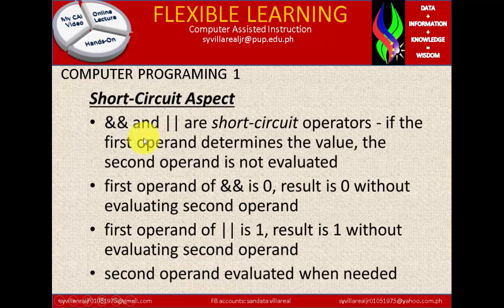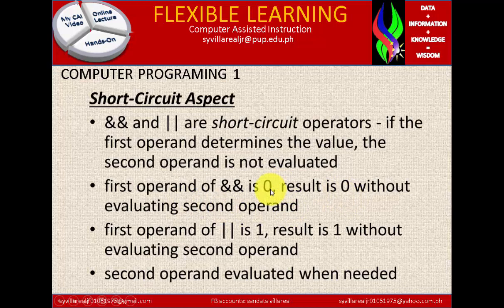Short-circuit aspect: double-ampersand (AND) and double-pipe (OR) are short-circuit operators. If the first operand determines the value, the second operand is not evaluated. If the first operand of AND is 0, the result is 0 without evaluating the second operand — because it is multiplication and if you start with 0, everything is 0. If the first operand of OR is 1, the result is 1 without evaluating the second operand, because in addition if there is a 1, everything is 1. The second operand is only evaluated when needed.